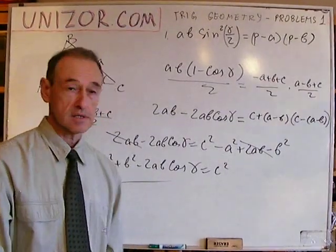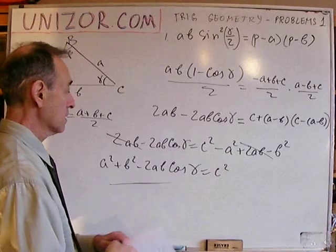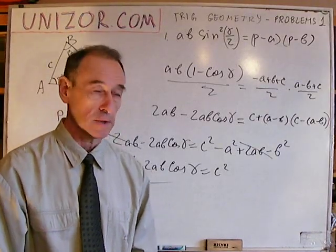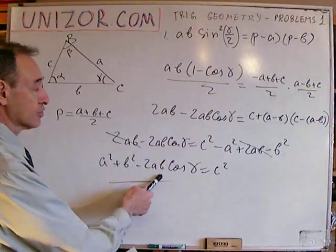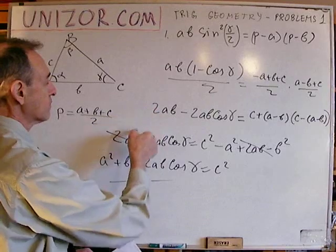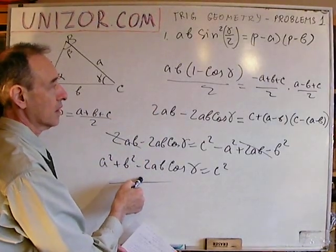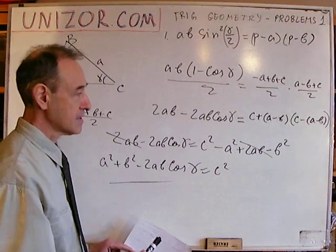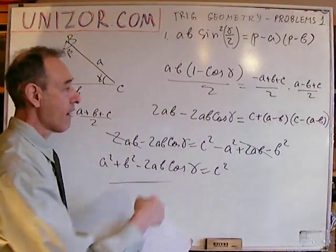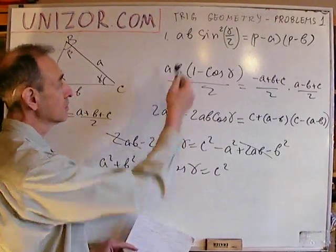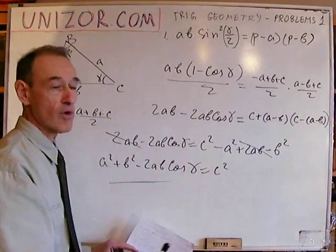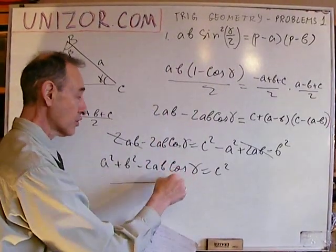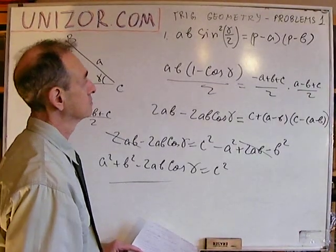So from this, using these transformations, we came to the law of cosines, which is true. Does it mean the original statement is true? Well, not exactly. What we have to say is this very important phrase: since all transformations are reversible — they're all invariant transformations, we didn't lose anything, we didn't add anything — I can go from the law of cosines back to the original statement. And that's the proof. From the true statement, following reversible steps, we arrive at the original. That's the end of the proof.